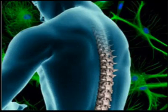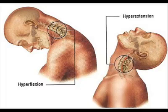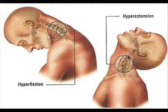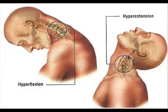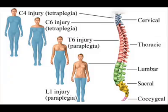The spine is divided into four parts: cervical spine, thoracic spine, lumbar spine, and the sacral spine. 55 percent of spinal cord injuries are of the cervical spine; the rest are equally divided between thoracic, lumbar, and sacral. The most common injury level is C5, followed by C4, C6, and T12.